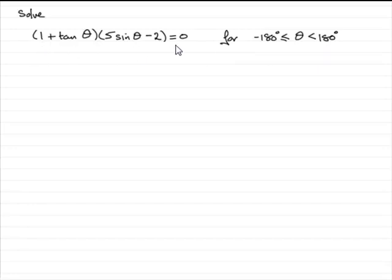So how do we do this? Well first of all what I notice is that this is factorized and it equals 0. So there's no need to expand this. All we can do is just say that either this factor or this factor equals 0. So therefore 1 + tan θ = 0 or the other factor 5 sin θ - 2 = 0.